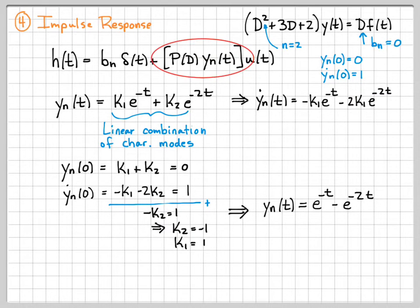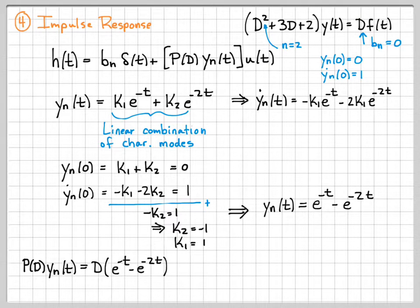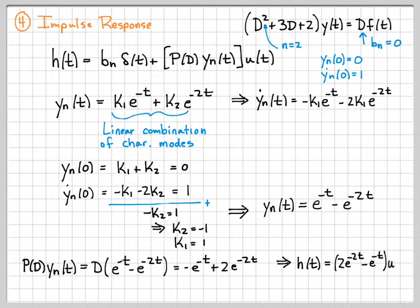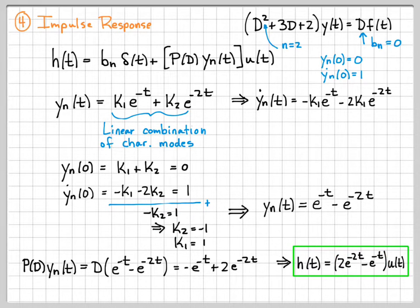Now I'm ready to compute P(D) yn of t. P(D) is just d, so I just take the derivative of yn of t, which gives minus e to the negative t plus 2e to the negative 2t — the minus 2 comes down and makes it a positive 2. I know the other term is zero. Plugging into the final equation, the impulse response h of t equals the quantity 2e to the negative 2t minus e to the negative t, times u of t.